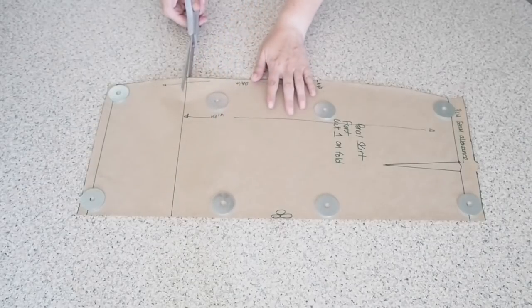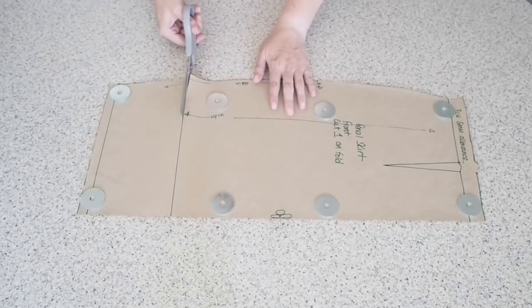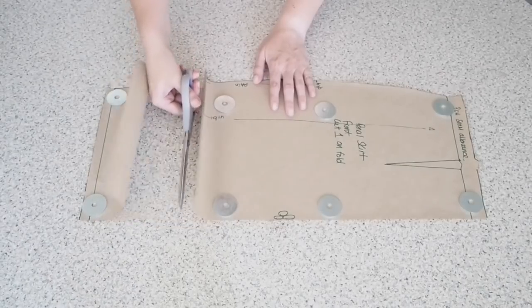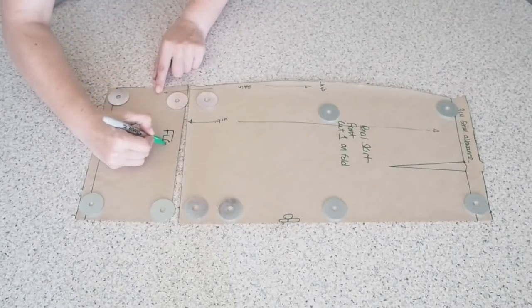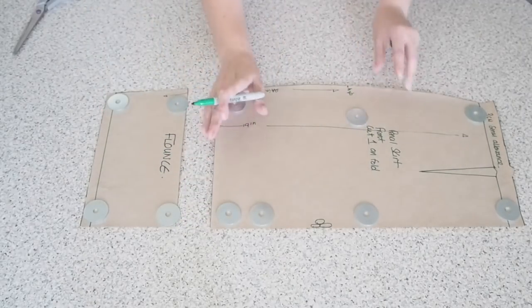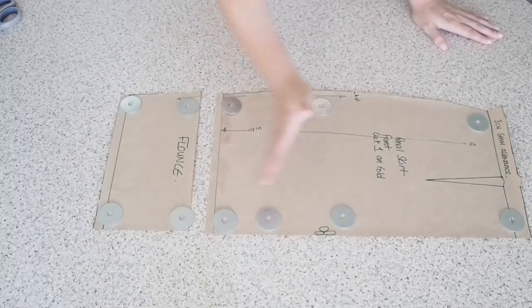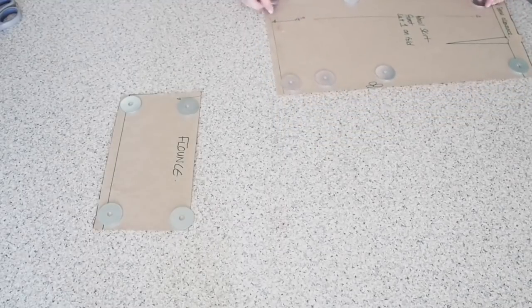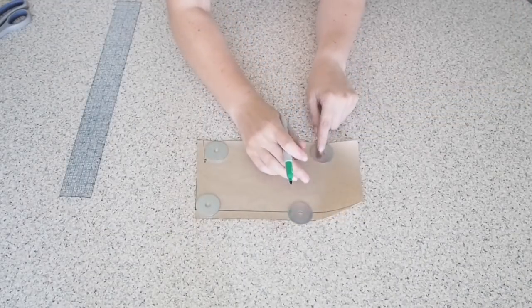And from here on out I'm just going to work on the skirt front but just bear in mind I'm going to do exactly the same thing on the skirt back. So I measured up my five inches, drew a line straight across and then separated the flounce from the skirt piece itself. Added one centimeter seam allowance to the bottom of the skirt and that's me finished with the top part of that skirt for now.